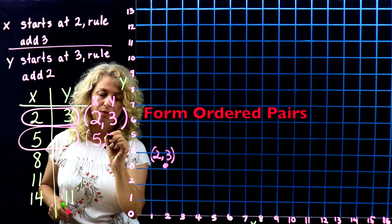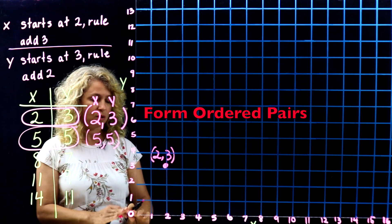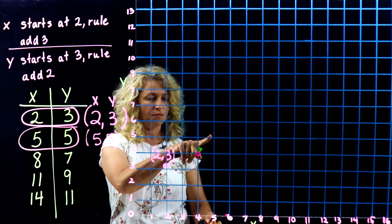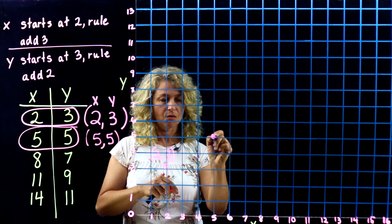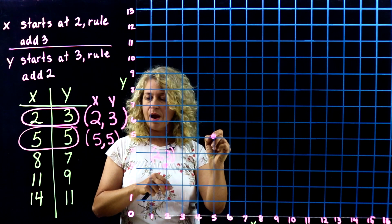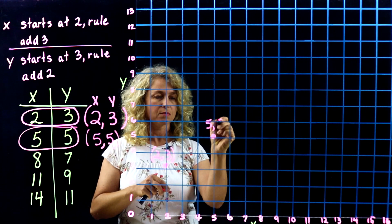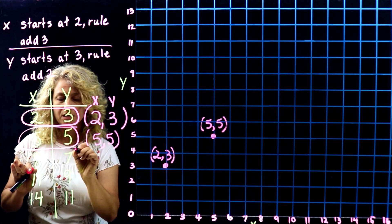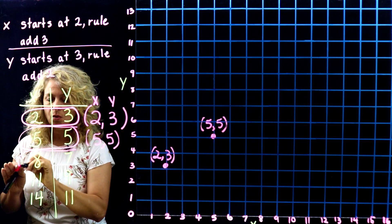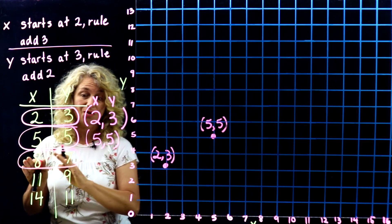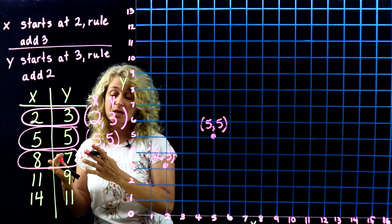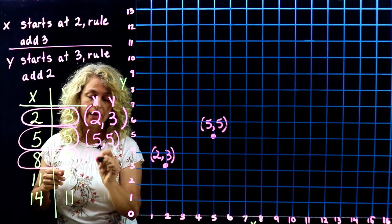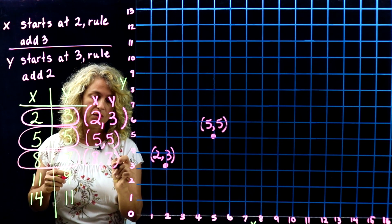For (5, 5): start at the origin, go over 5 and up 5, and place it on the graph. The third ordered pair from the corresponding terms is (8, 7).